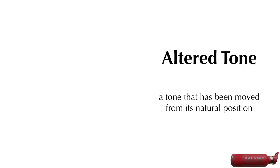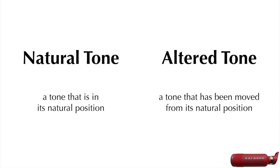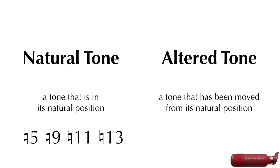An altered tone is a tone that has been moved from its natural position. So a tone that is in its natural position is a natural tone, whereas a tone that has been moved from its natural position is an altered tone. The natural tones are the natural 5, natural 9, natural 11, and natural 13. Some people abbreviate these as simply the 5, 9, 11, and 13, but in this video I will be super specific so as not to confuse anyone.